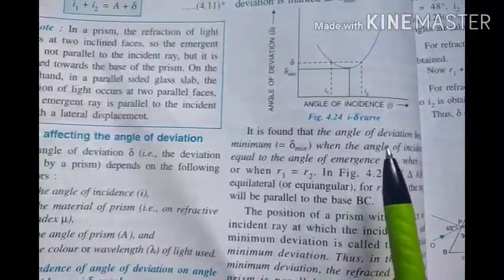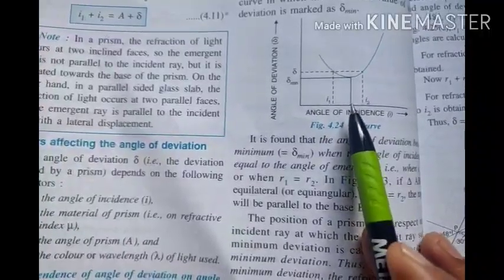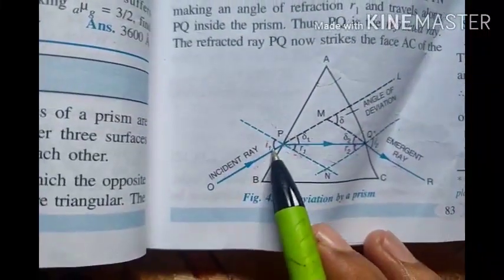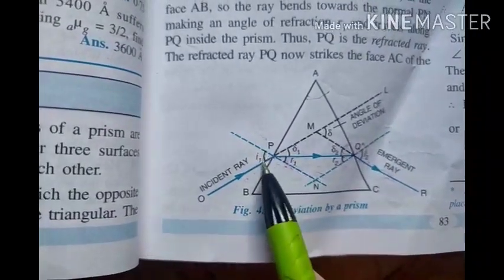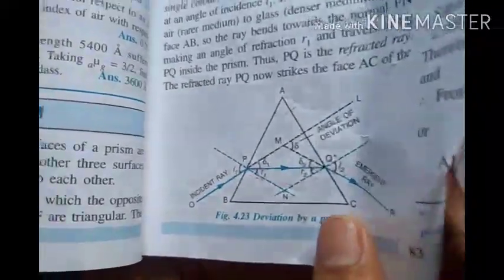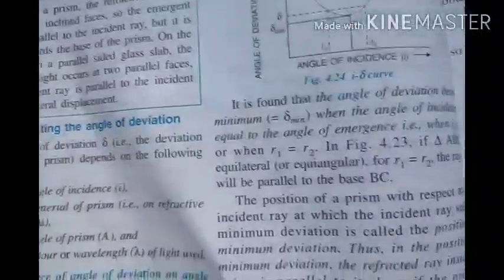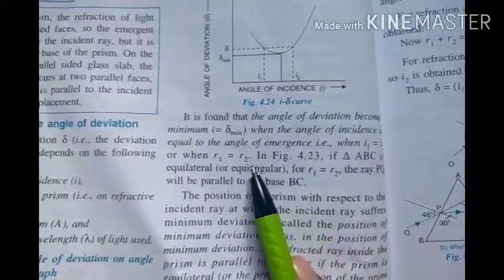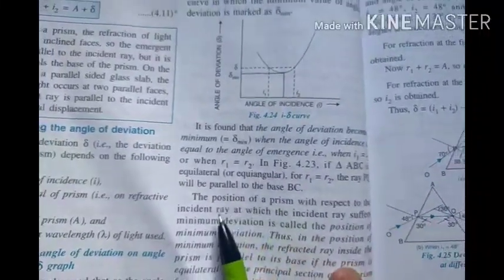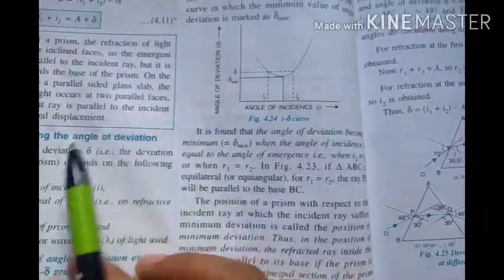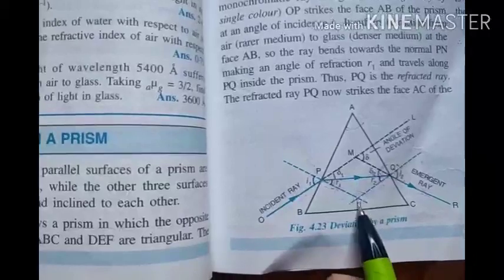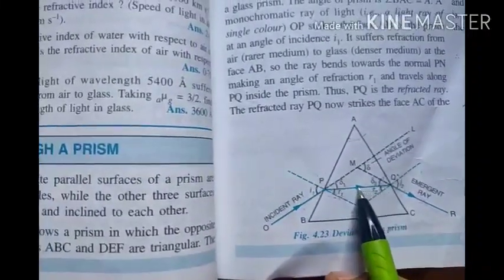It is found experimentally that the angle of deviation becomes minimum only when the angle of incidence equals the angle of emergence — that is, when i1 equals i2. When i1 equals i2, it follows that r1 equals r2 as well. In this case, the refracted ray through the prism must be parallel to the base, since if these two angles are equal, the path through the prism forms a straight symmetric line parallel to the base.